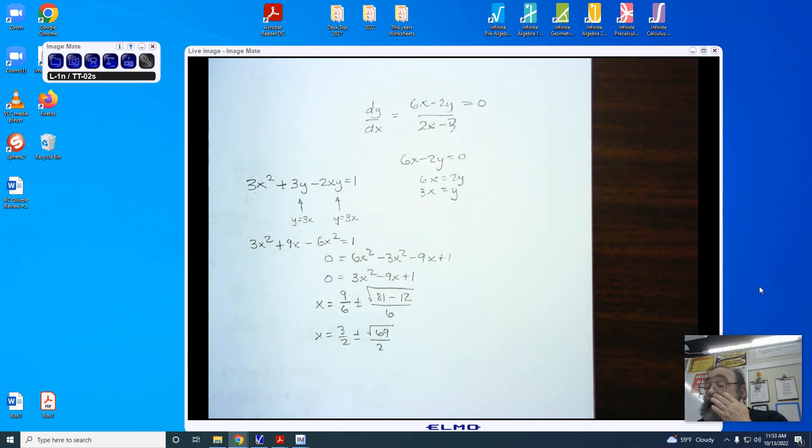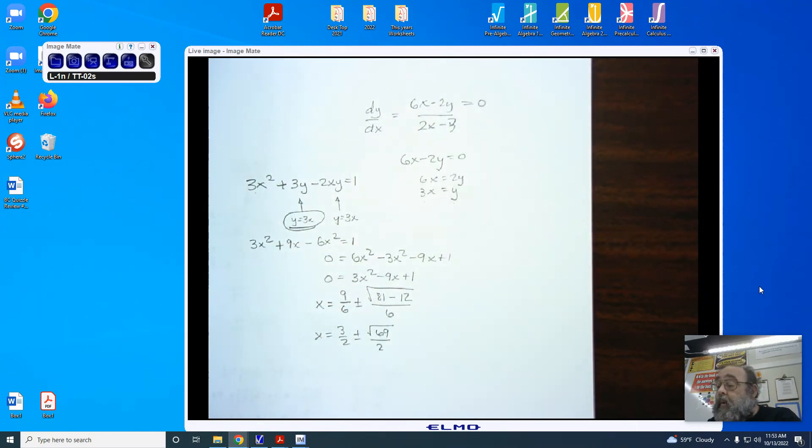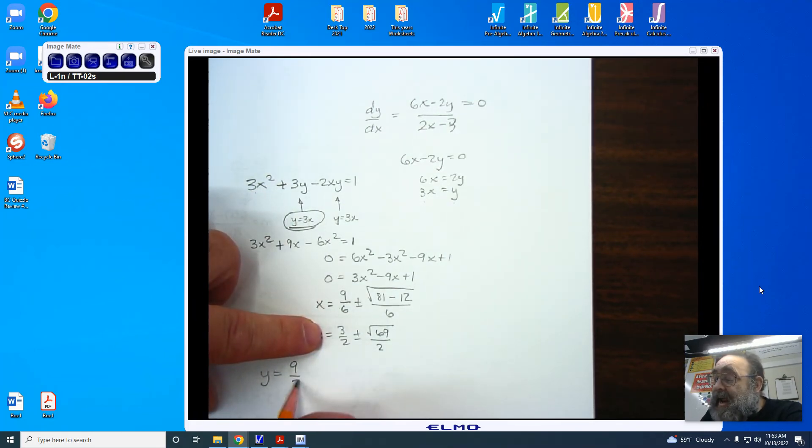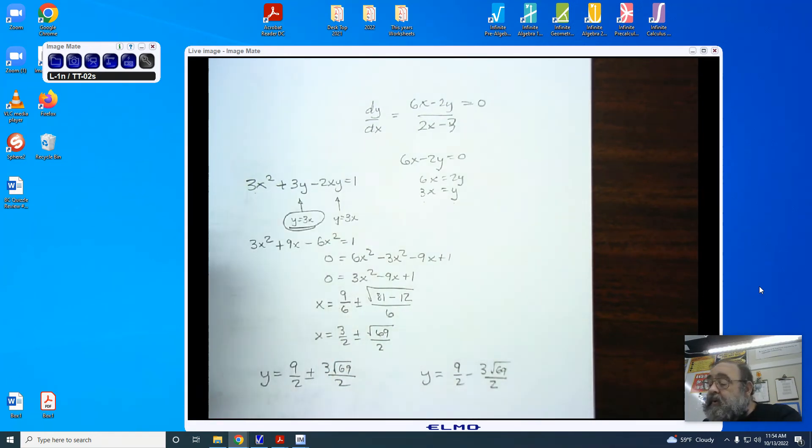You'll notice I have reduced that. Notice our y is 3 times x. So, if our y is 3x, then my y value that is associated with the first x is 9 halves plus or minus 3 root 69 halves. The second y value is going to be the minus, 9 halves minus 3 square root 69 divided by 2. And all I did was place it into y equals 3 times x.